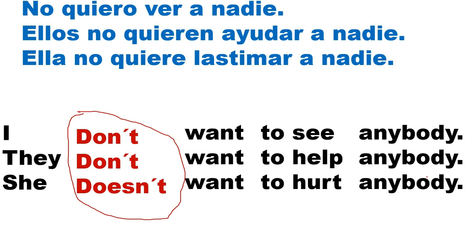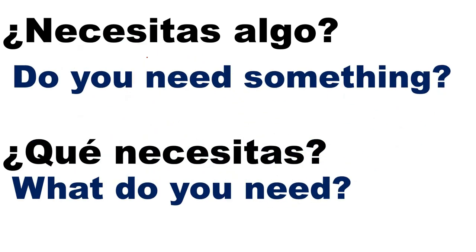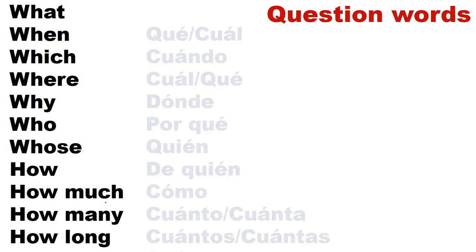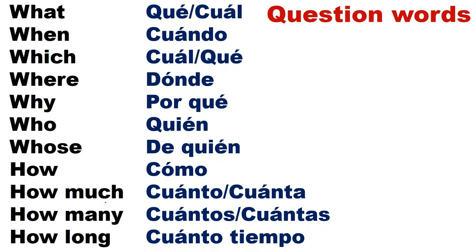All this information was about negative sentences. Now let's start with questions. When we make questions in English, some questions have a question word — the WH words. Others have no question word. For example: 'Do you need something?' versus 'What do you need?' In English we have these question words: What, When, Which, Where, Why, Who, Whose, How, How much, How many, How long. You can pause the video to review their translations.